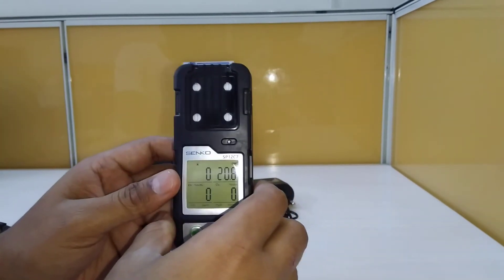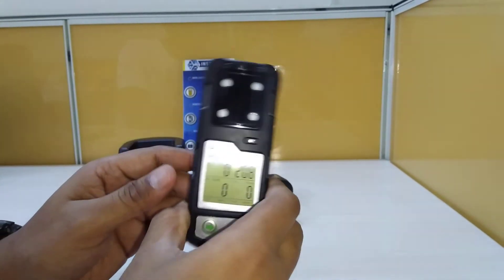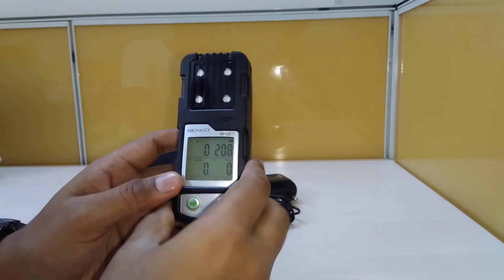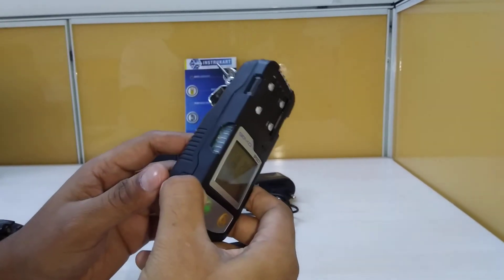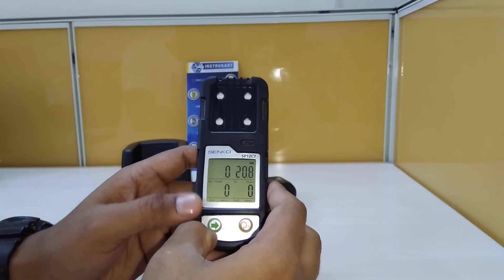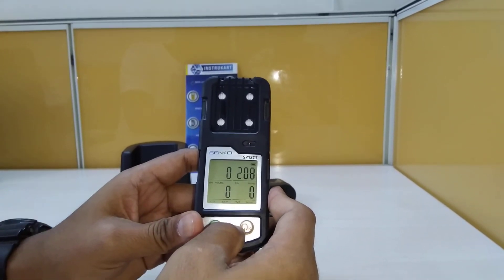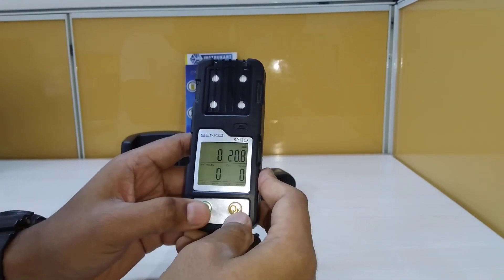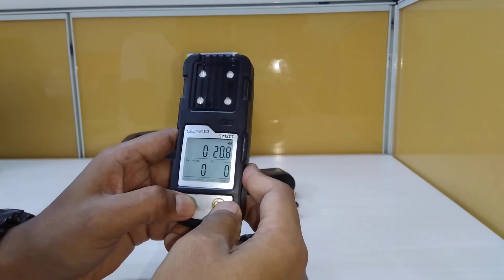This comes with two years warranty. This is made by Senko, which is from Korea. To turn it off, we press this button and keep pressing the arrow button.